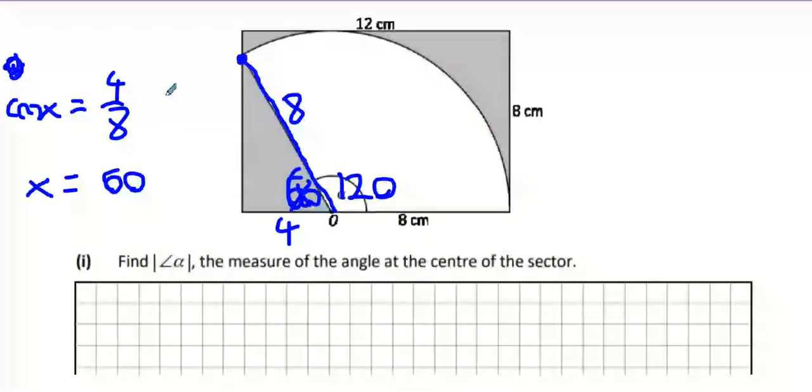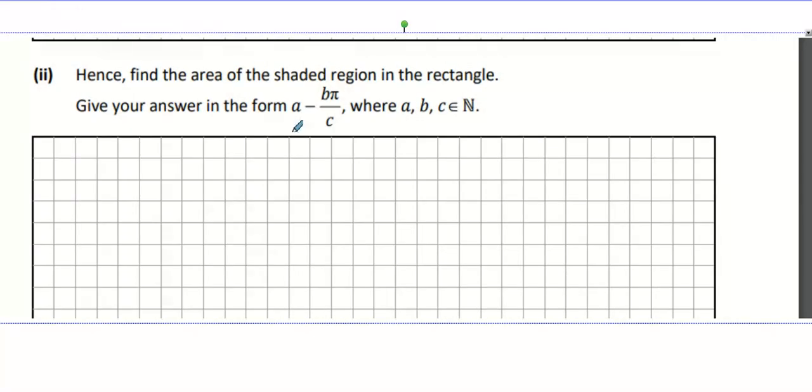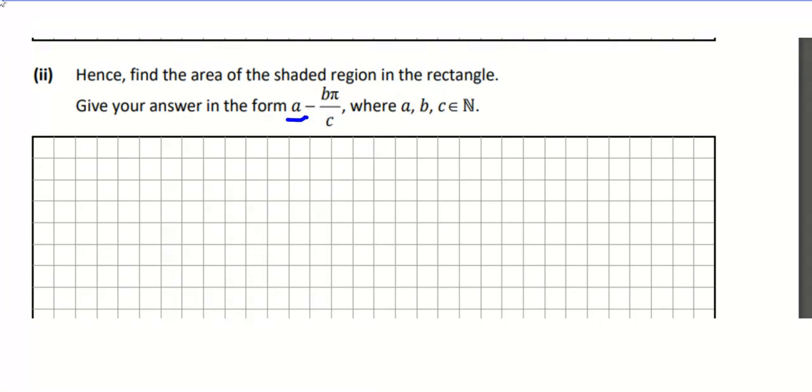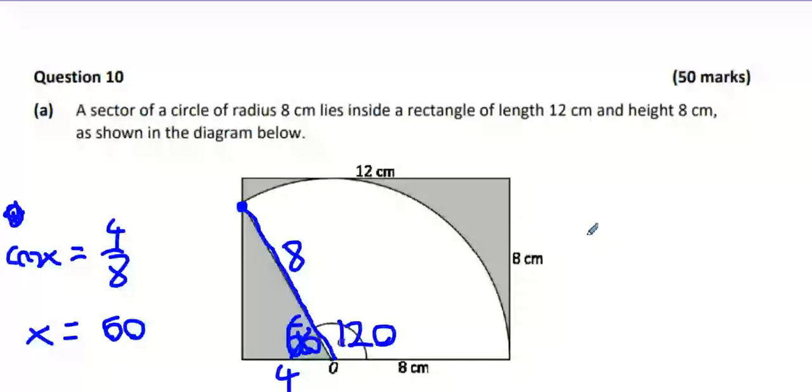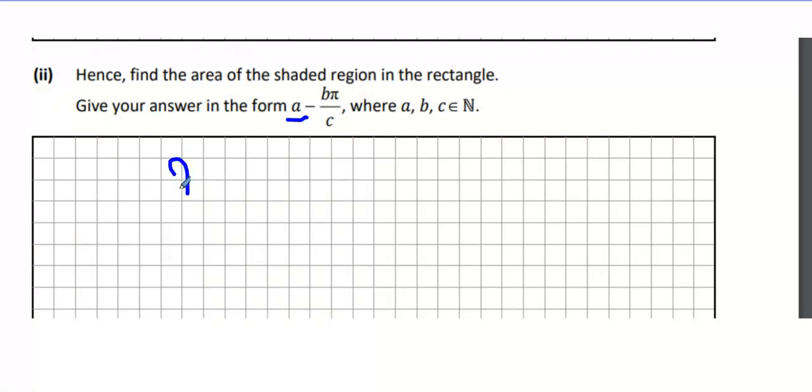Most people got that wrong. Very rare people got that right, actually. Next thing. Find the area of the shaded region in the rectangle. Well, A is the rectangle. What's the rectangle? The rectangle is 8 multiplied by 12. 8 multiplied by 12 is 96.